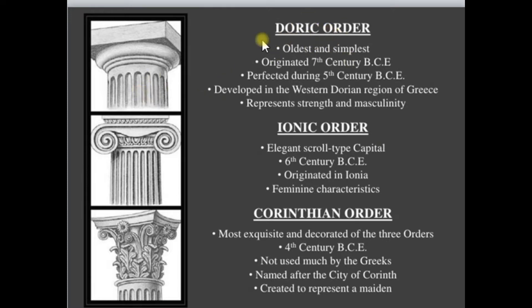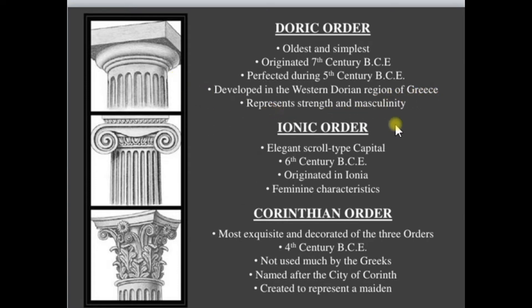The Doric order is the oldest and simplest among the three orders. It was perfected during the 5th century BC and developed in the western Dorian regions of Greece. It represents strength and masculinity.